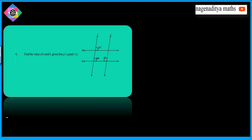Welcome to ninth class. Here is the solution for the sixth problem. Find the values of A and B, given that P is parallel to Q and R is parallel to S.